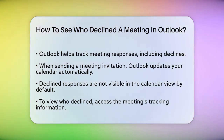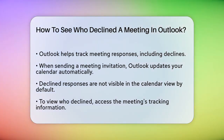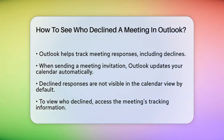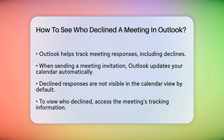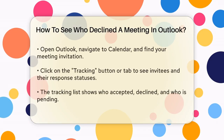When you send a meeting invitation, Outlook automatically updates your calendar based on the responses you receive. However, by default, it doesn't show you who declined the meeting directly in the calendar view. To see a complete list of all the people you invited and their responses, including those who declined, you need to check the meeting's tracking information.